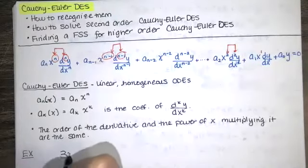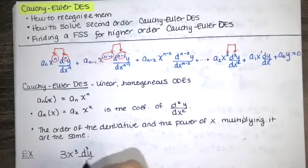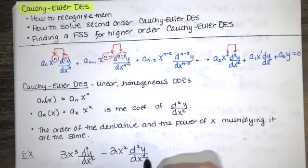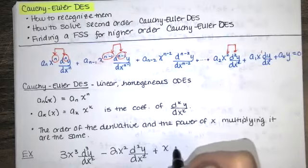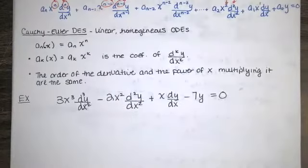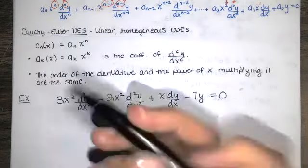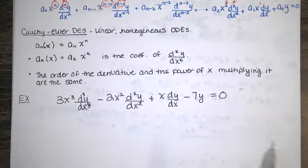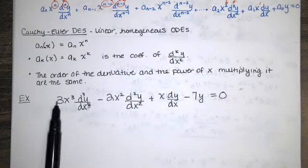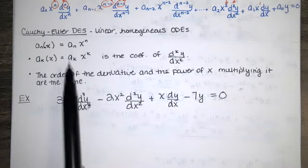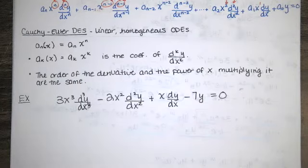For example, if you have 3x cubed times the third derivative of y minus 2x squared times the second derivative plus x times the first derivative minus 7 times y equals 0, this is a Cauchy-Euler differential equation. The constants 3, negative 2, 1, and negative 7 are what a sub n and a sub k represent — they're just real numbers. If a differential equation has this form, we say it's Cauchy-Euler.